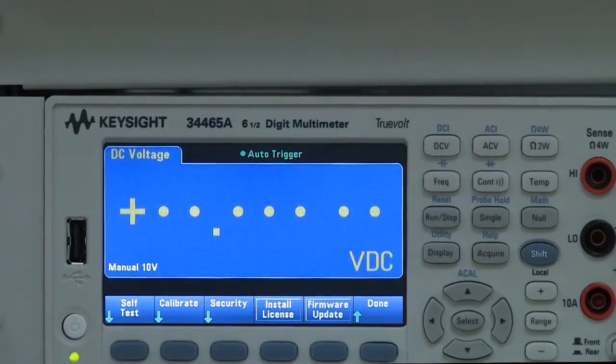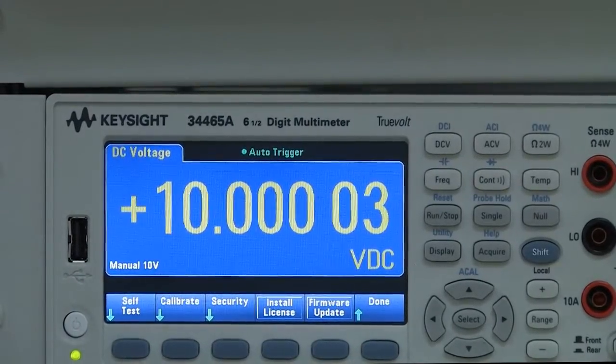The auto calibration completes and the error is reduced. As you can see, with auto calibration, the multimeter is able to make consistent measurements in varying temperature environments. Thank you.